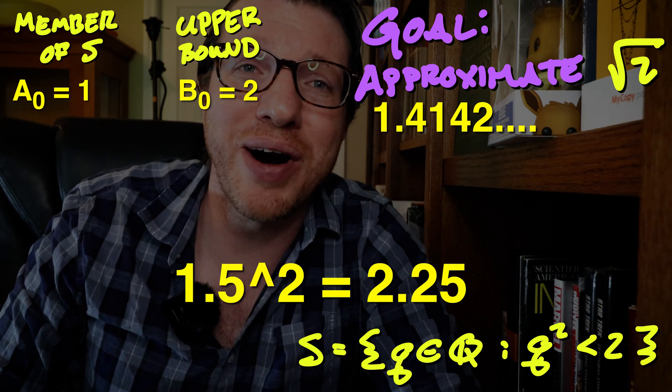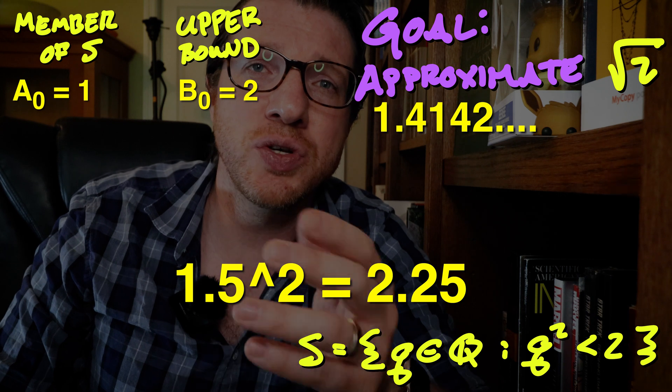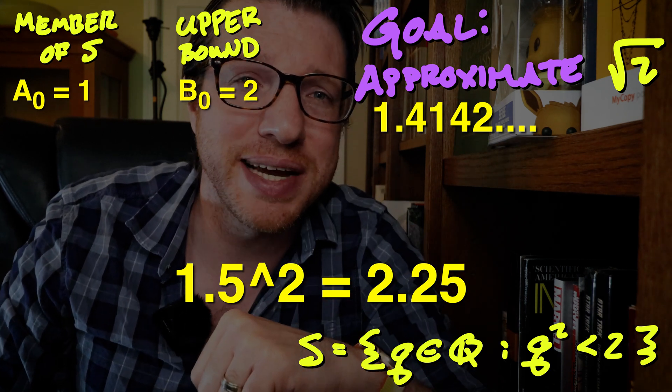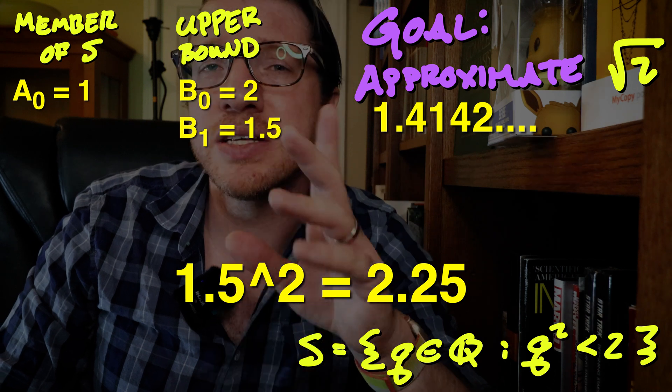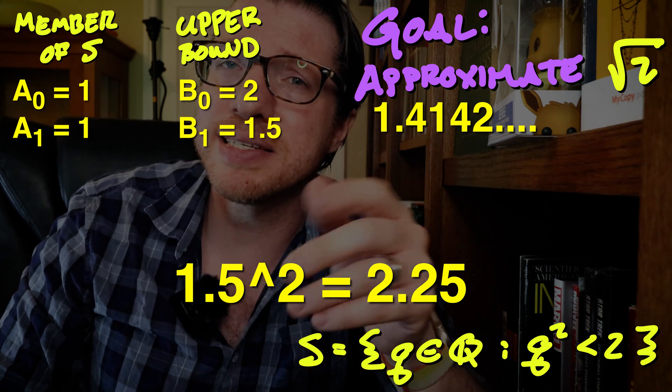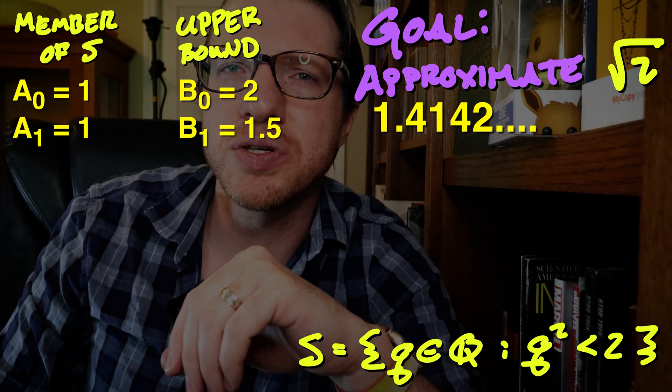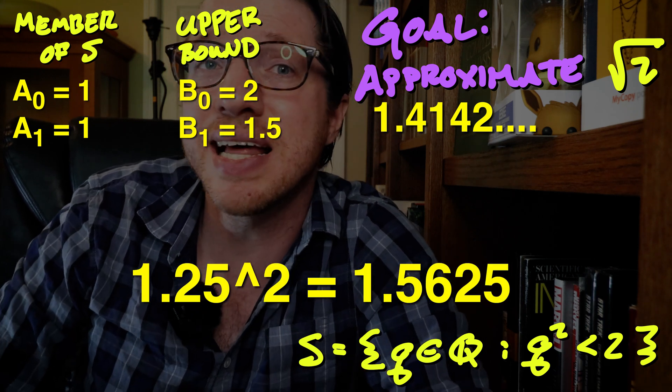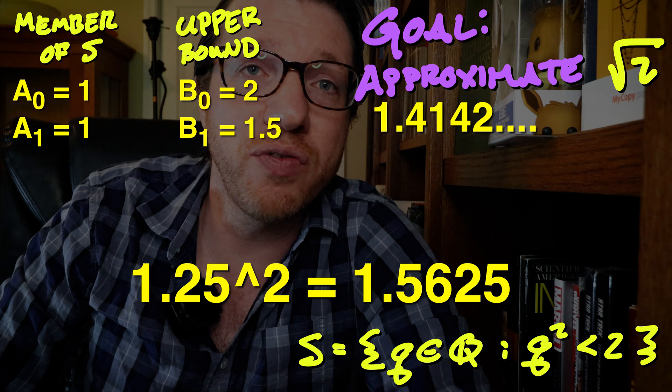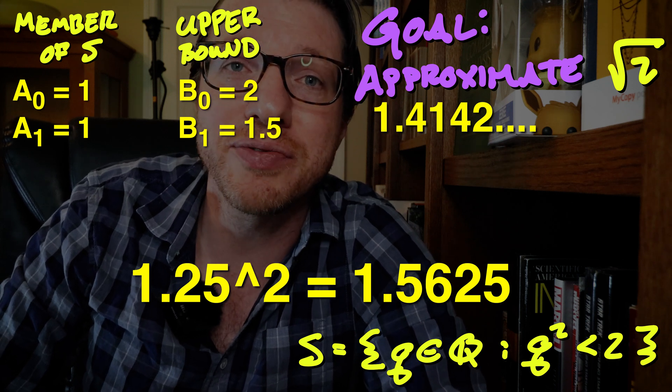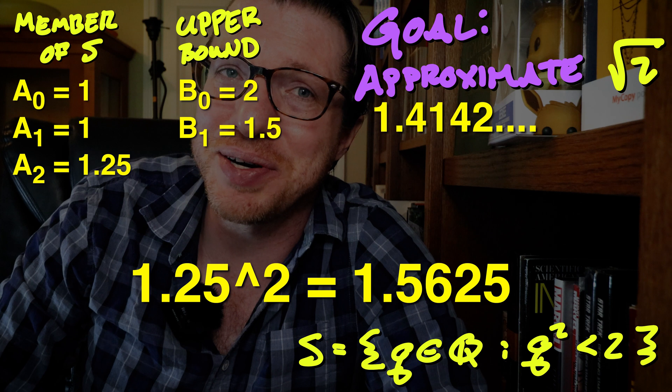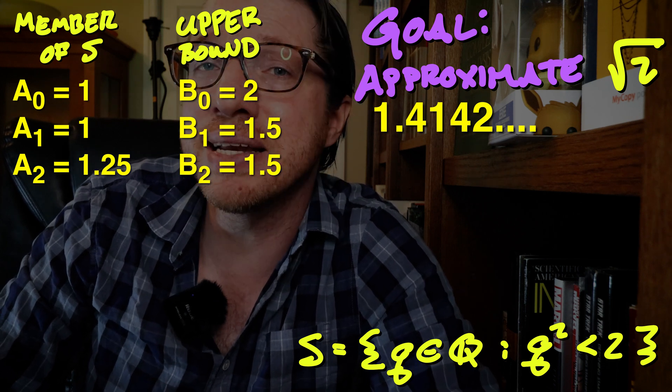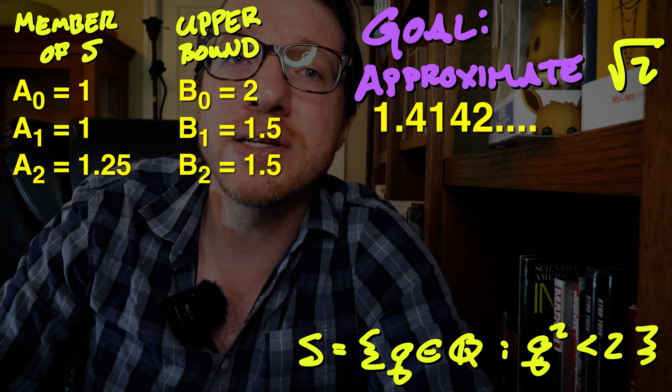Their average is 1.5, and the square of 1.5 is 2.25. Hence, it is a new upper bound for our set. That gives b1 as 1.5 and a1 stays the same as 1. Let's average these two as 1.25. Now the square of 1.25 is less than 2. So we find a member of a that is greater than or equal to 1.25. Since 1.25 is in our set, we'll just use that. b2 is 1.5.